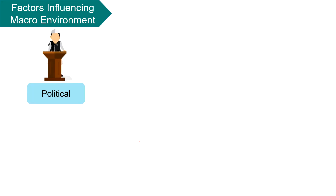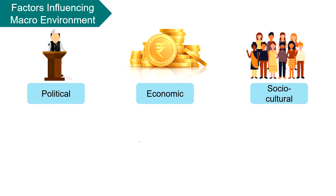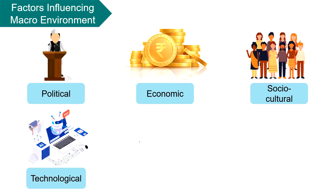Political factors include political conditions such as general stability and peace in the country and the attitude of the elected government towards business. Economic factors — the economic stability and conditions of the region and the country as a whole have a significant bearing on the company's profitability. Sociocultural environment consists of those factors concerned with human relationships like customs, traditions, beliefs, values, morals, tastes and preferences of the society at large, and these factors also have a great impact on the business. Technological factors — changes in technology affect the way of doing business and so have a great impact on the survival and profitability of the company.